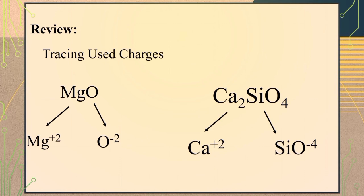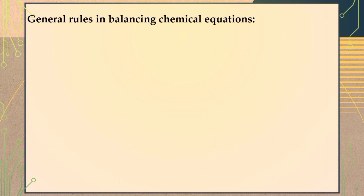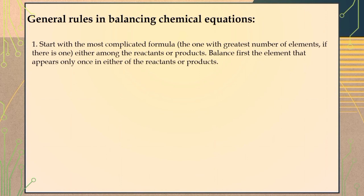For non-reducible formulas, it is easier to trace. Balancing chemical equations is usually done by inspection, one element at a time. There are no definite steps to follow in the process. Just keep in mind the following general rules. Number one: start with the most complicated formula — the one with the greatest number of elements. If there is one, either among the reactants or products, balance first the element that appears only once in either the reactants or products.